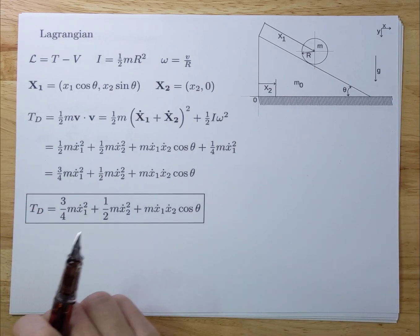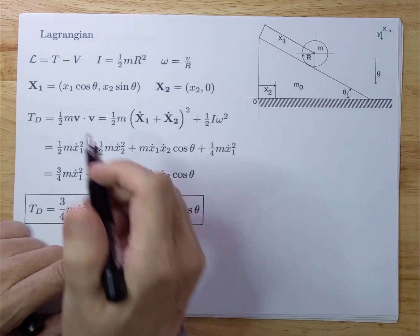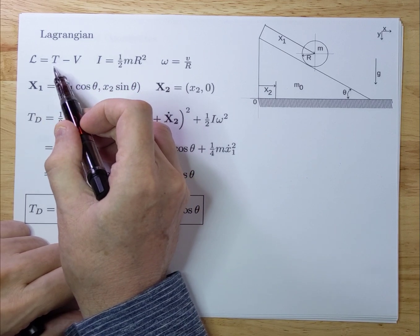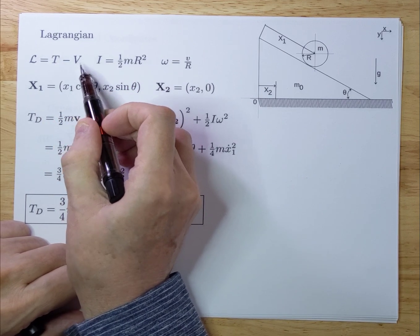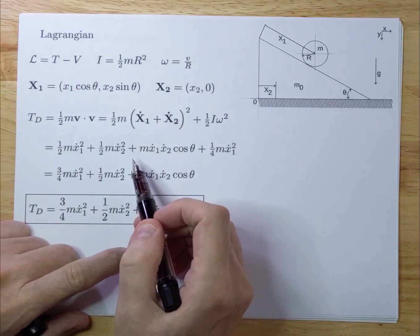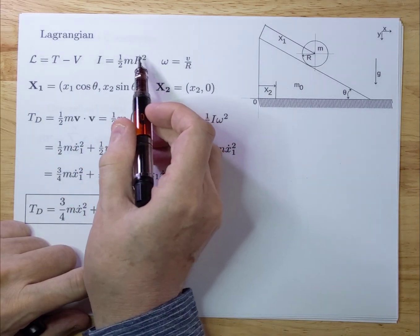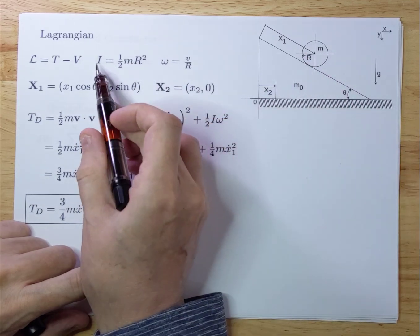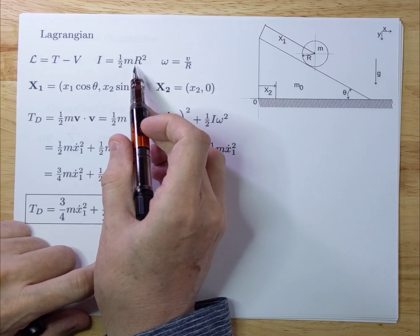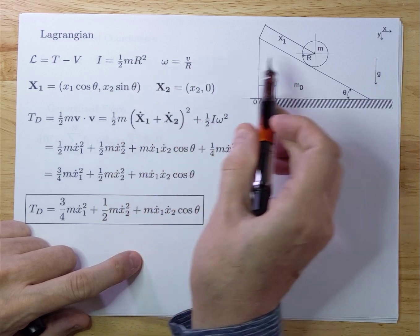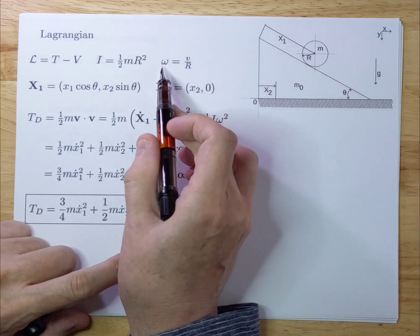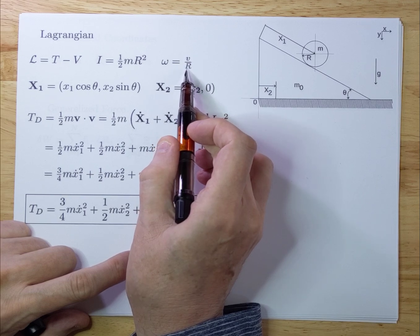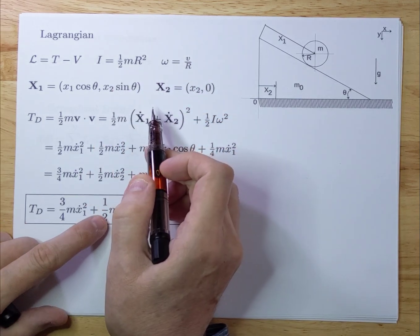That makes the Lagrangian quite a bit easier. The Lagrangian is always the sum of the kinetic energy minus the potential energy. For reference, if you have a disc that rotates, the moment of inertia is half mr squared, and the rotating disc omega equals v over r — we need those later.